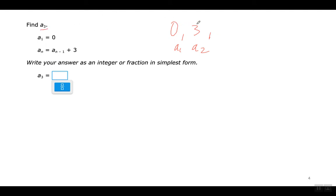The first term is 0, the second term is 3. Cuando vean A sub N menos 1, esto siempre quiere decir el término anterior. Así que le estamos sumando 3 a cada término anterior. El segundo término sería 0 más 3 que me da 3. El tercer término sería 3 más 3 que es 6.